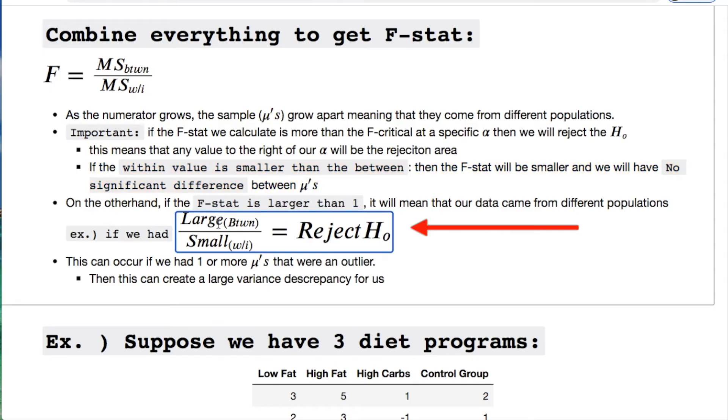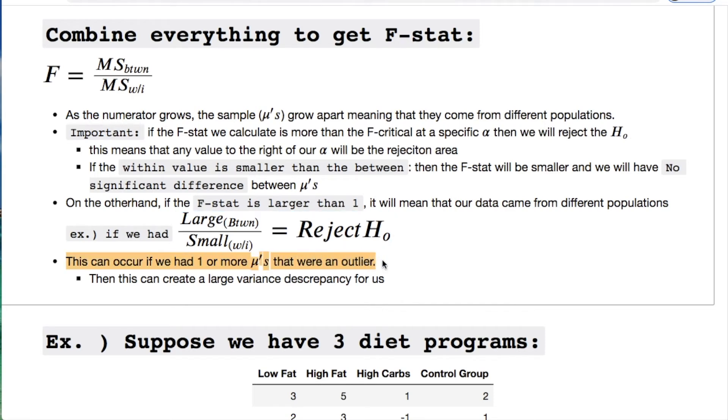On the other hand, I'm just reiterating here so you get an idea. And you'll say well what's going on here? Well this can occur if we have one or more means that are an outlier and then we can say that this creates a large variance discrepancy for us which would cause this issue.